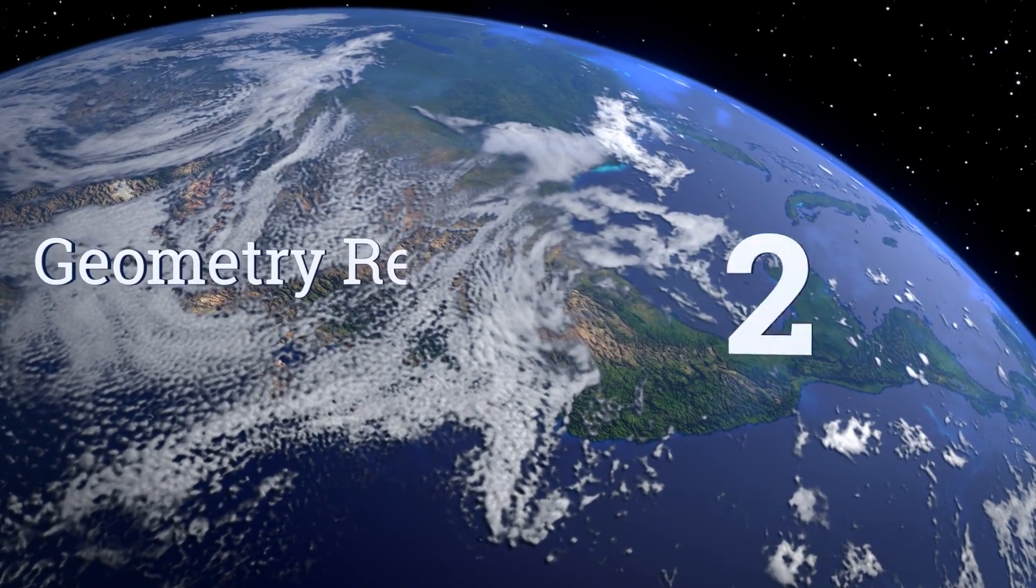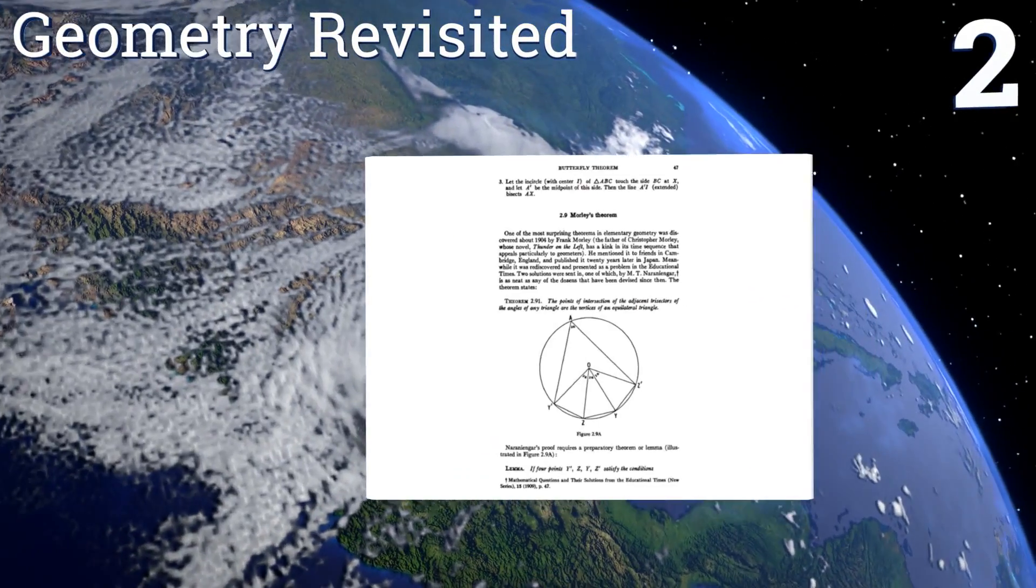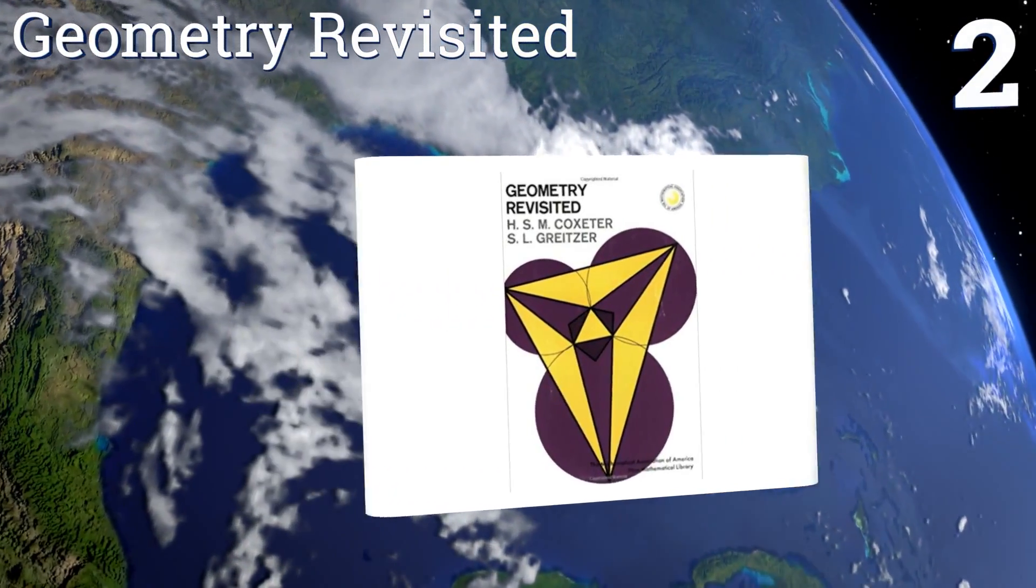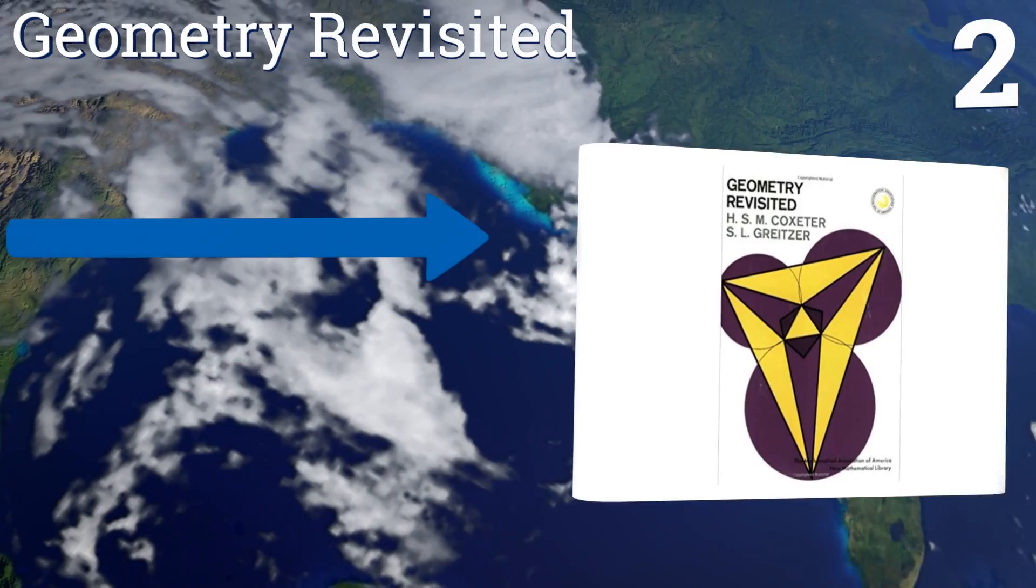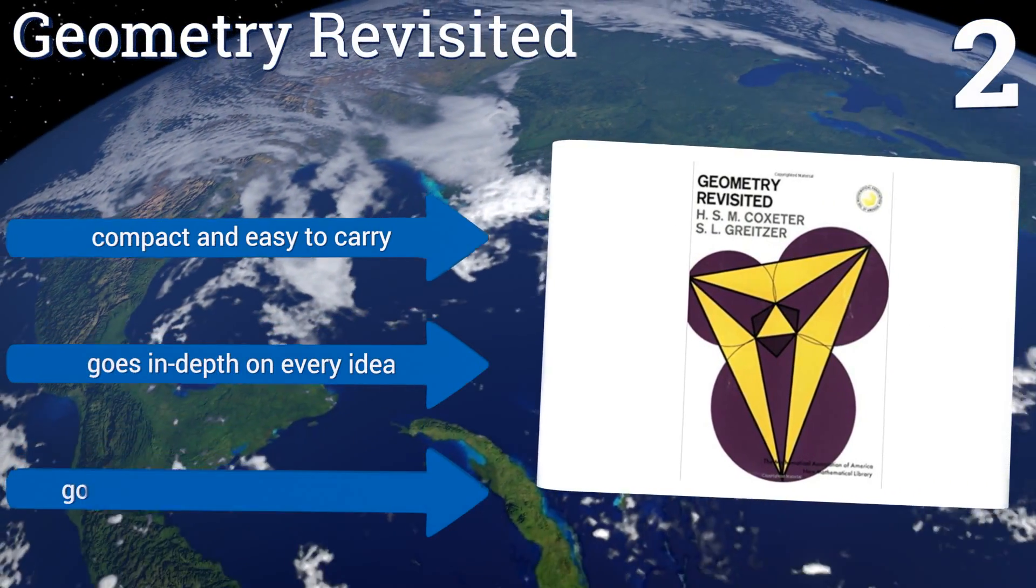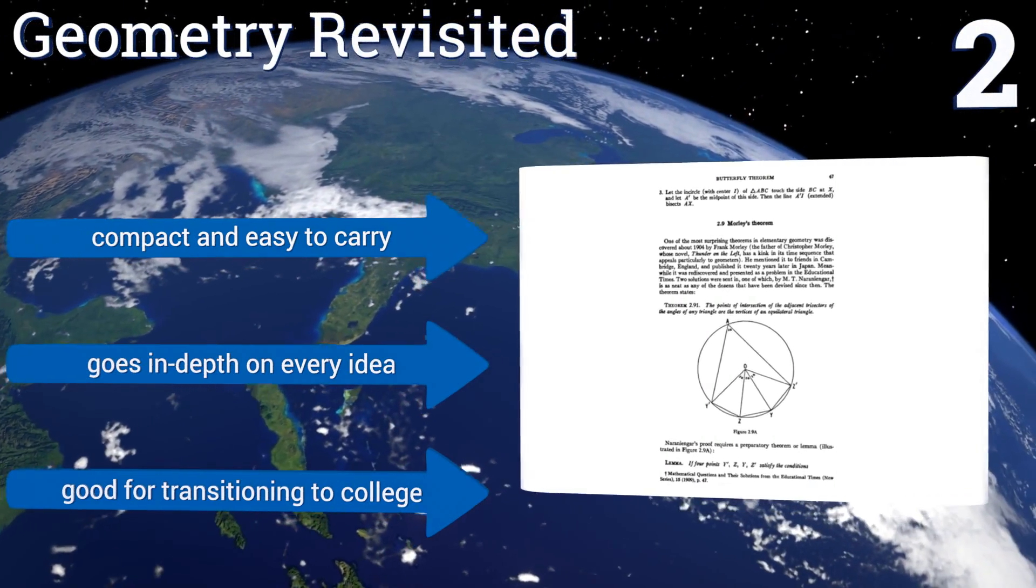At number 2, serious pupils looking to get involved in competitive mathematics will want to have a copy of Geometry Revisited on their bookshelves. This text assumes a working knowledge of the material but ensures that the concepts are thoroughly understood at a high level. It's compact and easy to carry and goes in-depth on every idea. It's good for transitioning to college.